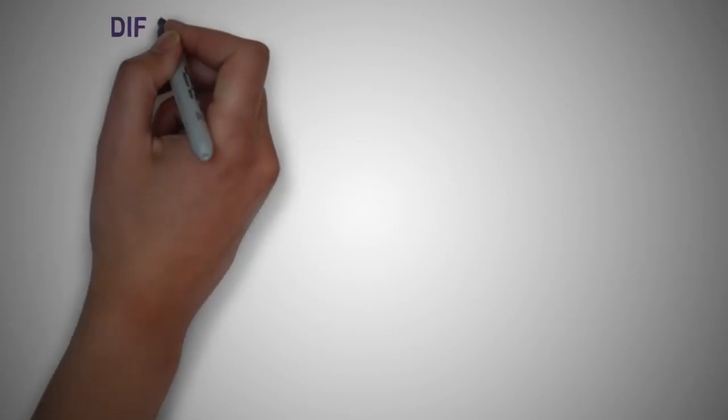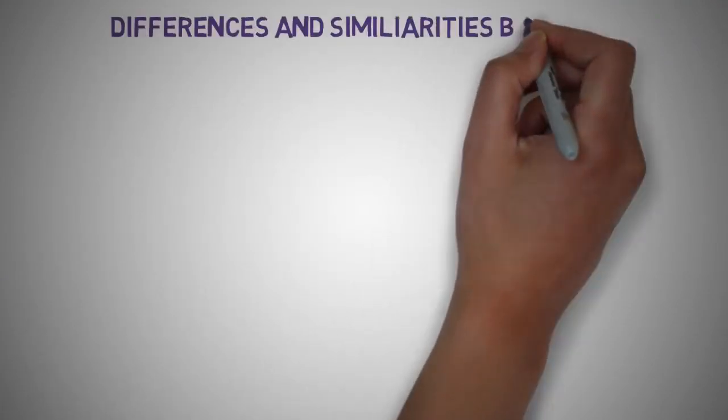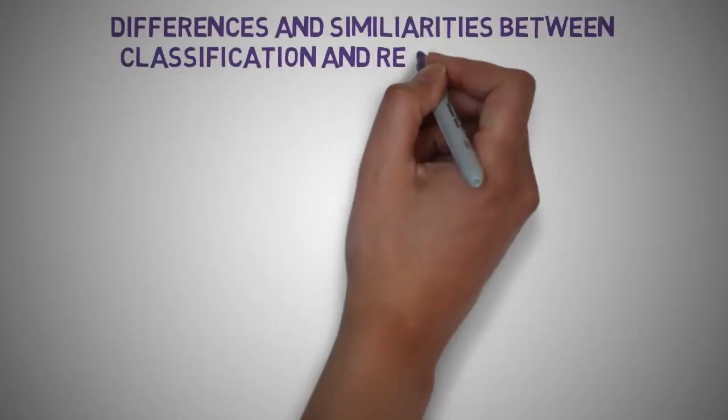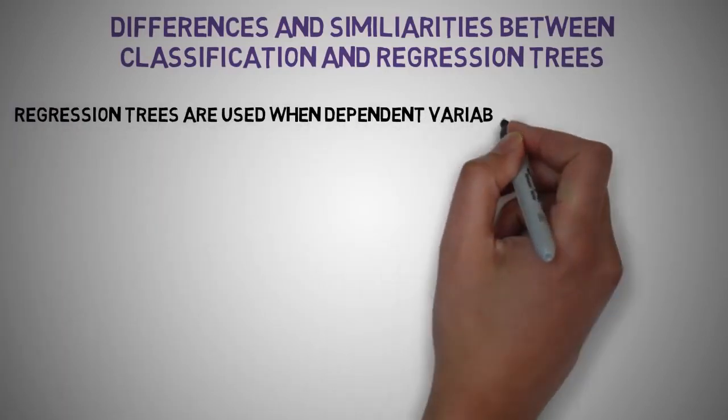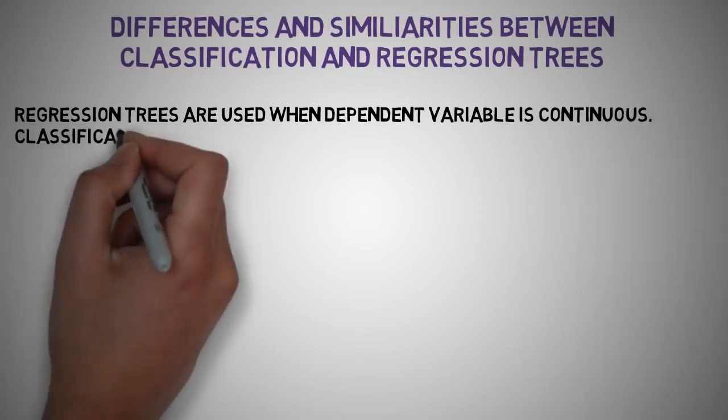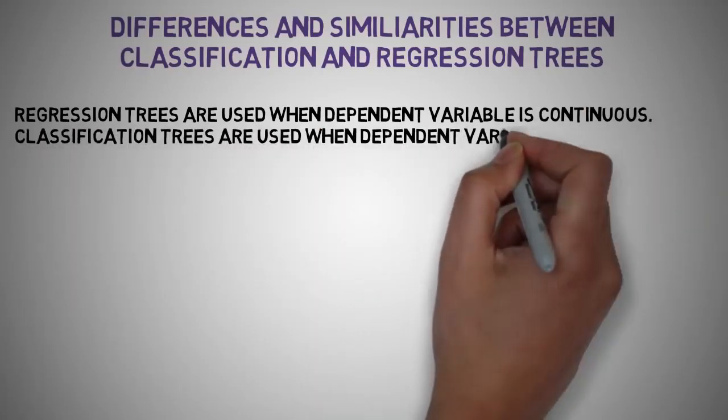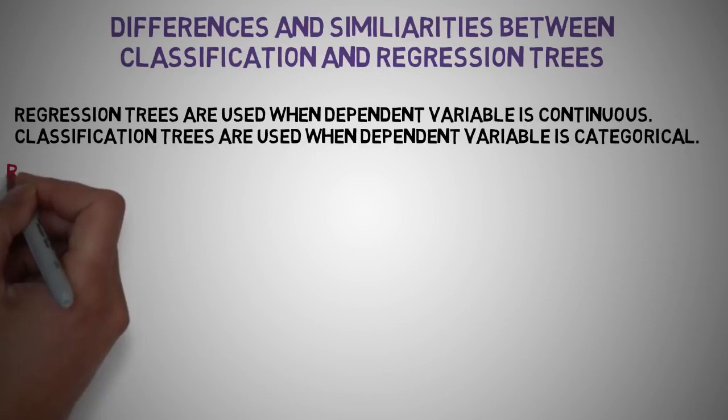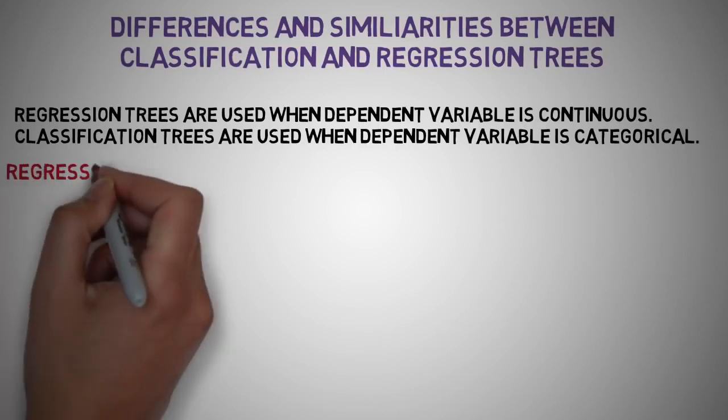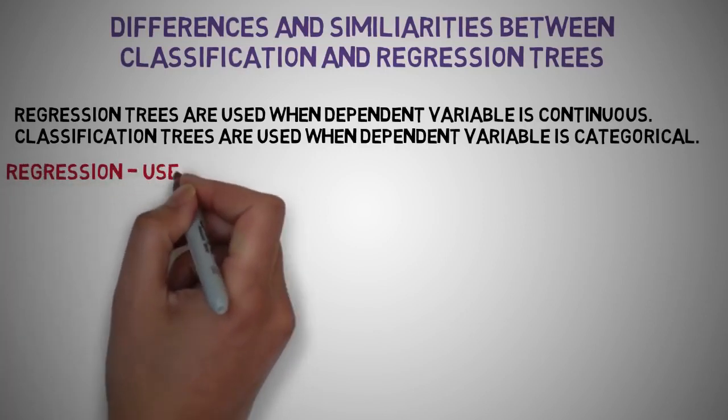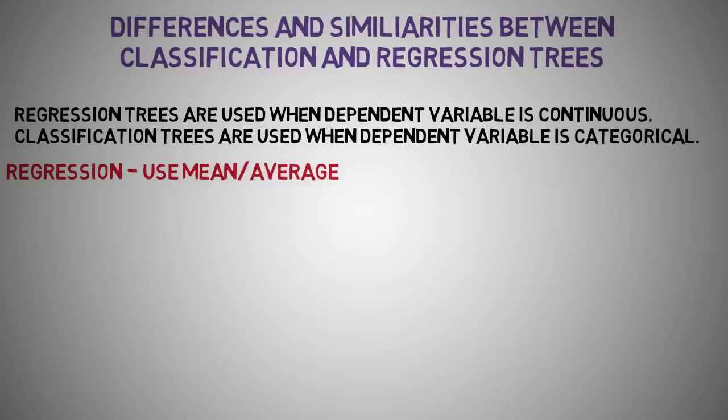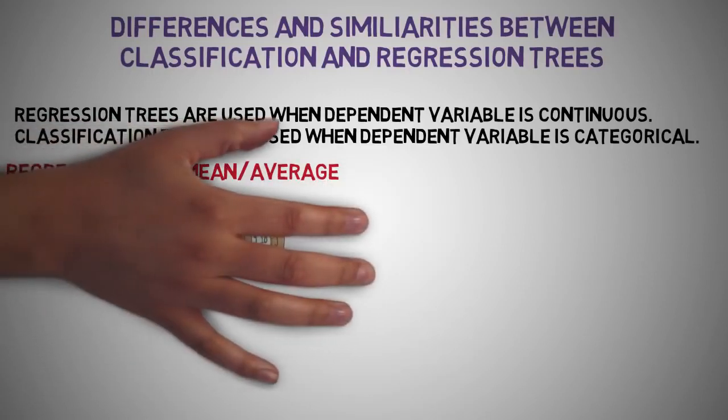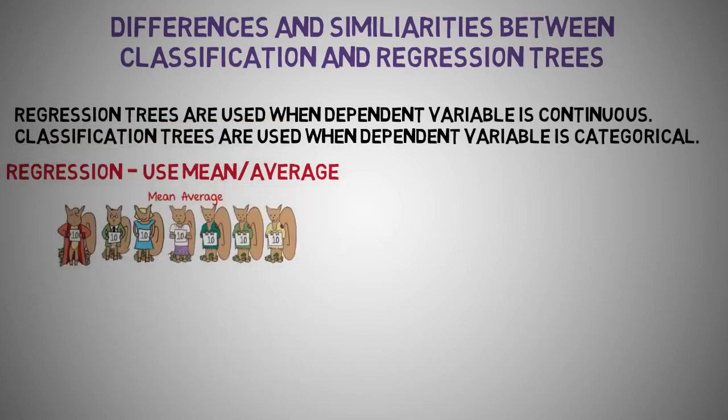Let's look at the primary differences and similarities between classification and regression trees. Regression trees are used when the dependent variable is continuous. Classification trees are used when the dependent variable is categorical. In the case of regression trees, the value obtained by terminal nodes in the training data is the mean or average response of the observations falling in that region.